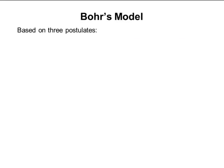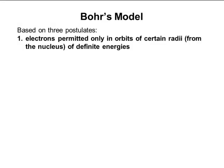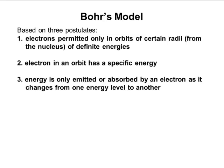We have to get them into the excited state first before they can fall back down to the ground state and emit the light. The Bohr model is based on three postulates. First: electrons are permitted only in orbits of certain radii from the nucleus of definite energies — those are the specific energy level circles. Electrons are only permitted in those orbits, and an electron in that orbit has a specific energy associated with that energy level. Second postulate: energy is only emitted or absorbed by an electron as it changes from one energy level to another.